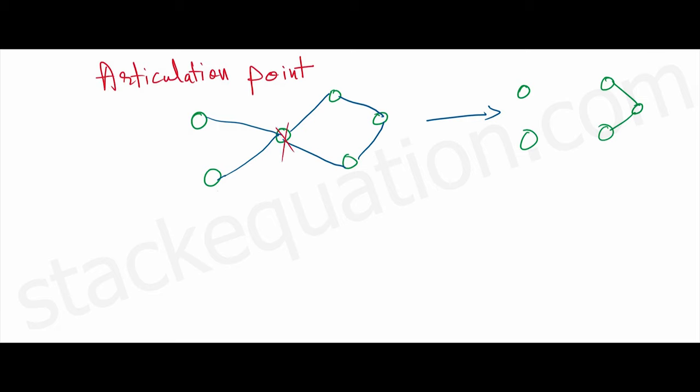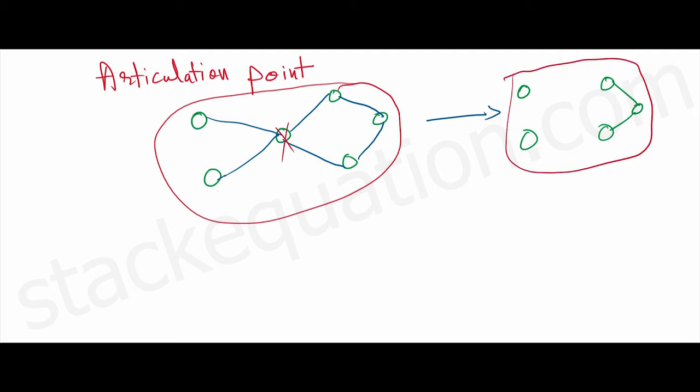If I remove this vertex, it will turn this well-connected graph into a not-so-well-connected graph. That means it will disconnect the graph. So an articulation point is a vertex in a graph which, if you remove it, will completely disconnect the graph.